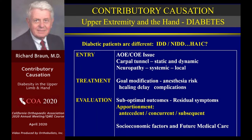Let's move to disease factors and talk about diabetes — a very prevalent problem. Diabetic patients are different; that includes both insulin-dependent diabetics (IDD) and non-insulin-dependent diabetics (NIDD). We're always working with the HbA1C measurement to evaluate sugar control and diabetic management. On entry into the system with the AOE-COE issue, we're asking: are we dealing with carpal tunnel syndrome as a static compression problem, or a dynamic problem that only occurs when the patient uses their hand repetitively and develops a pressure neuropathy? Or are we dealing with a systemic problem, or both simultaneously?